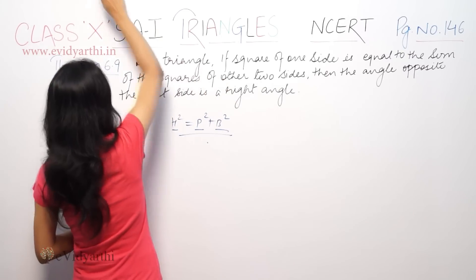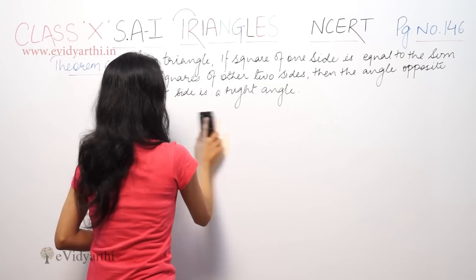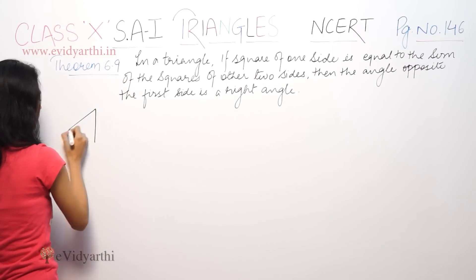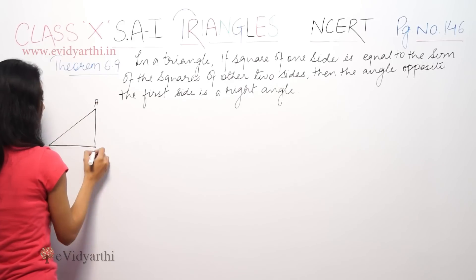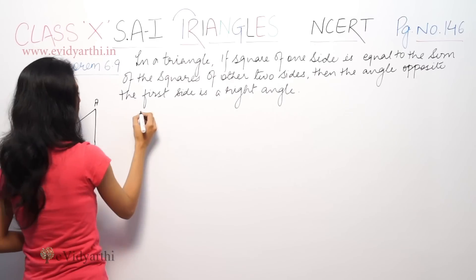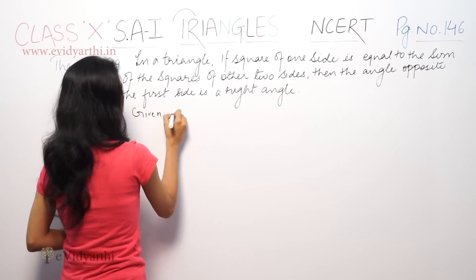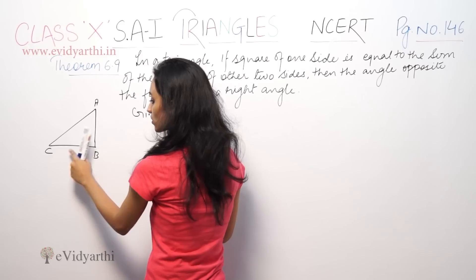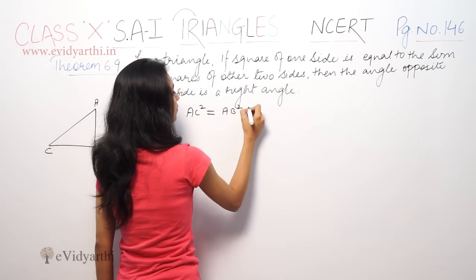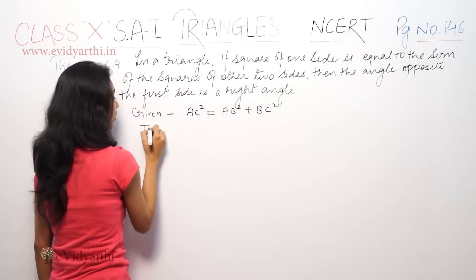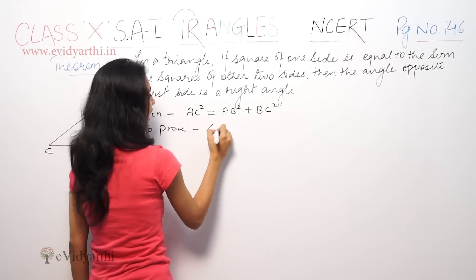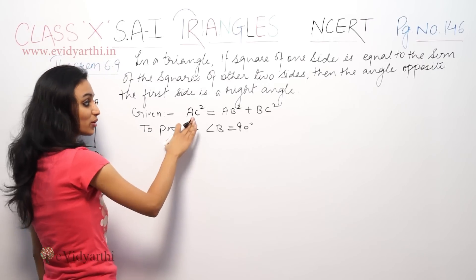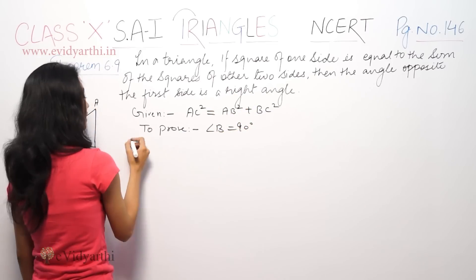Let's suppose we have one triangle given which is A, B, C. We have given that AC square, meaning hypotenuse squared, is equal to AB square plus BC square. We have to prove that angle B is 90 degrees. We have not given that it's 90 degrees. We have given that hypotenuse squared equals AB square plus BC square.